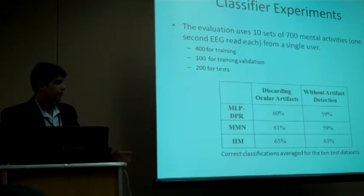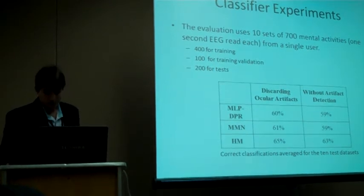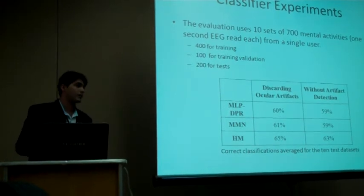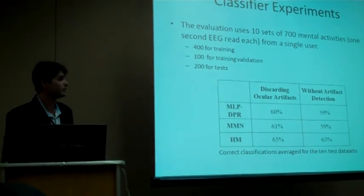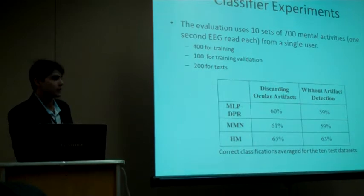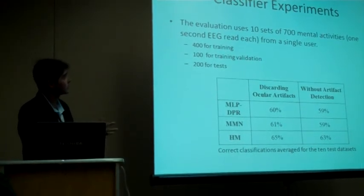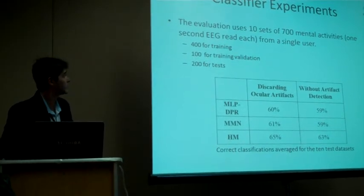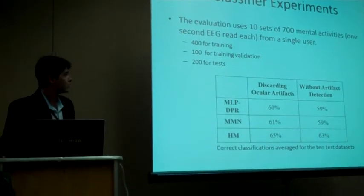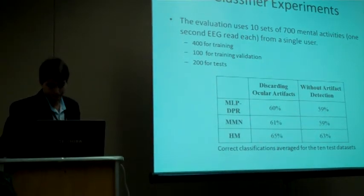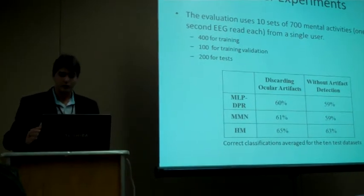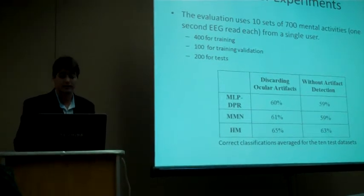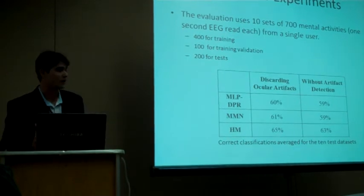These three models were evaluated with 10 sets of 700 mental activities. I call them mental activities, one second of each reading. It's from a single user. And from the 700 mental activities, 400 were used for training, 100 for training validation, and 200 for tests. And you can see the results are similar, but the hierarchical model reaches a higher value of 65% of right classifications.